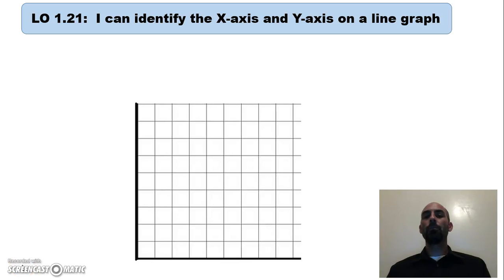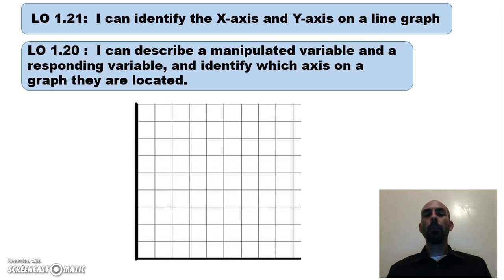There are a few learning objectives for this video. The first one is to help you identify the x-axis and the y-axis on a line graph. The second learning objective has two elements: to help you describe a manipulated variable and a responding variable, and to identify which axis on the graph they are located.